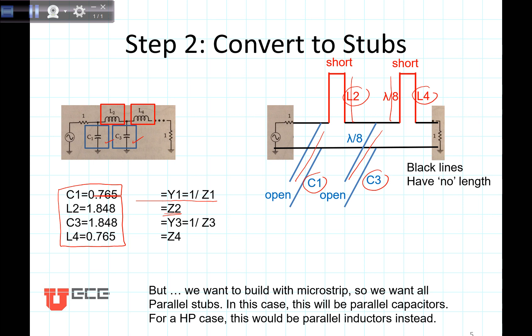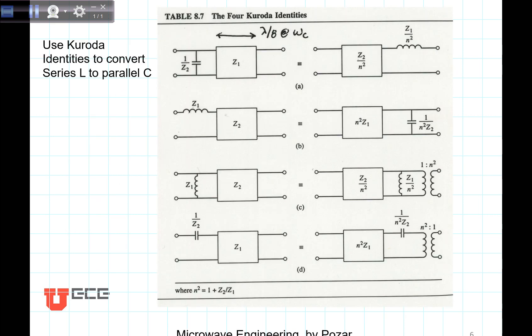This is a great design, except it's not very easy to build. We'd really like to build with microstrip, so we want to use all parallel stubs. Because we have parallel capacitors and we're doing a low-pass design, we need to convert this design to all parallel capacitors. These are the inductors that we need to convert to parallel capacitors. To do this, we're going to use the Kuroda identities.